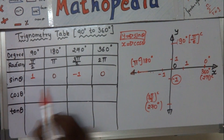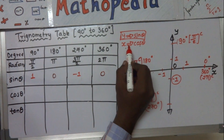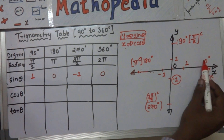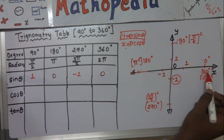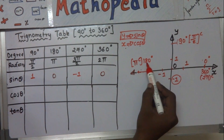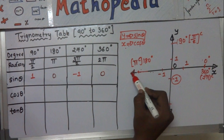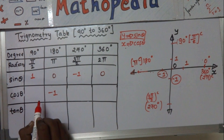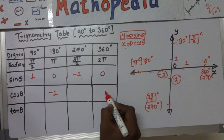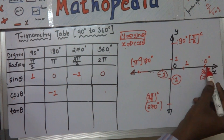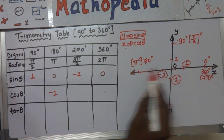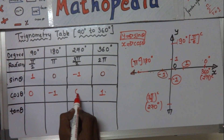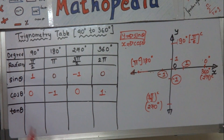Cos theta is related to the x-axis. The angles lying on the x-axis are 0 degrees, 180 degrees, and 360 degrees — and the values for 0 and 360 are the same. Cos 180 lies on the negative x-axis, so cos 180 is minus 1. Cos 360 lies on the positive x-axis, so cos 360 is plus 1. The remaining angles that lie on the y-axis have cos values of 0.